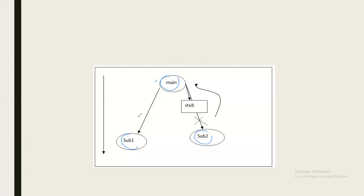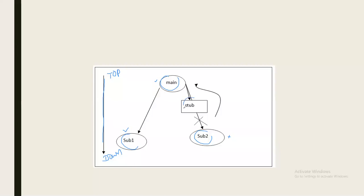Assume the project has three modules: main module, sub module 1, and sub module 2. The main module construction is completed, sub module 1 is also completed, but sub module 2 is under construction. In the top-down approach, you start integration testing from the top-level modules and go down to the lower-level modules. Whenever some sub modules are under construction, we start integration testing from the main module to sub modules using a temporary program called a stub.